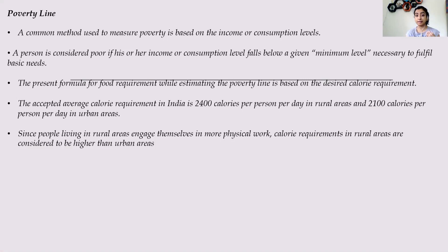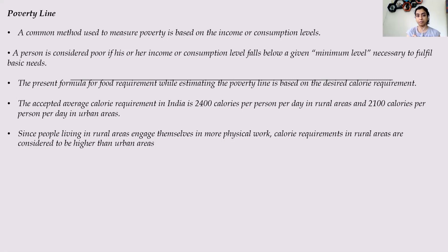With that, we can decide whether a family or a person falls below the poverty line or they are above the poverty line. A person can be considered poor if his or her level falls below the minimum requirement level. If a person is not able to sustain or get for himself or herself the basic minimum needs, then that person will be considered to fall below the poverty line.